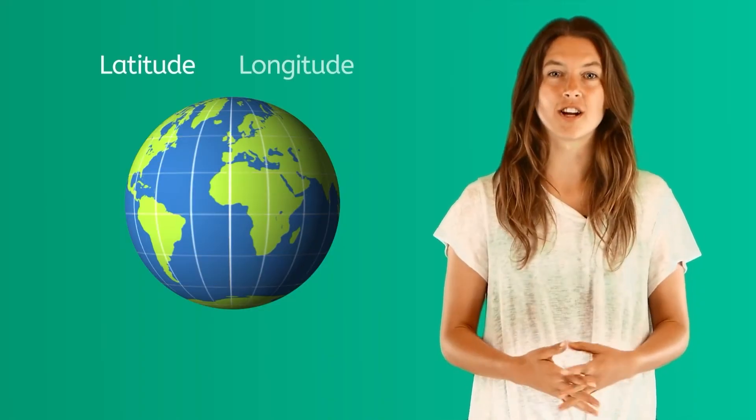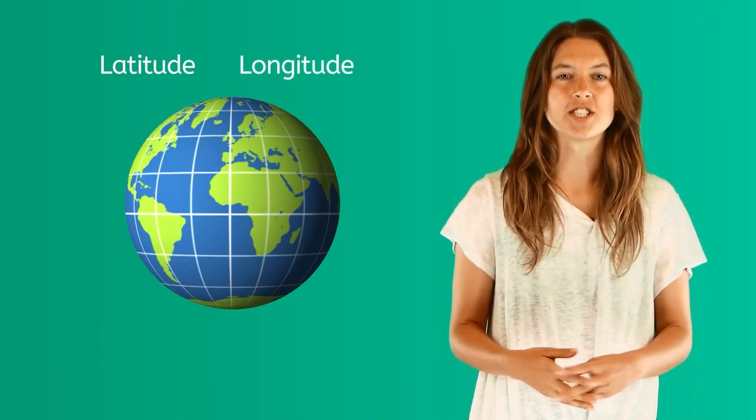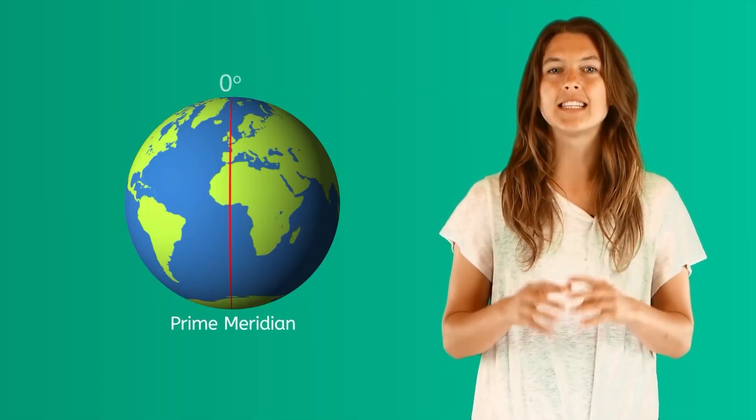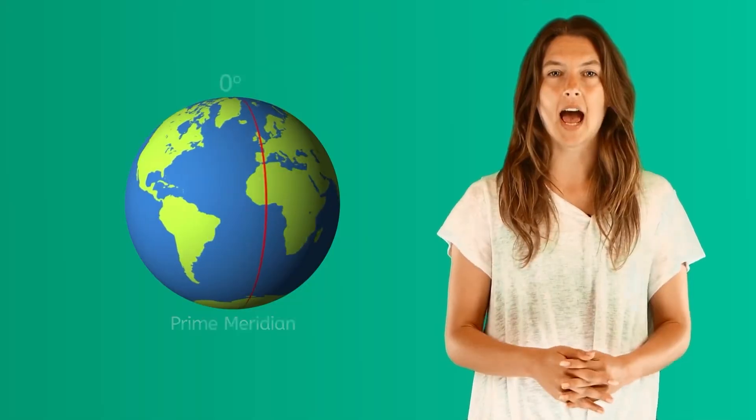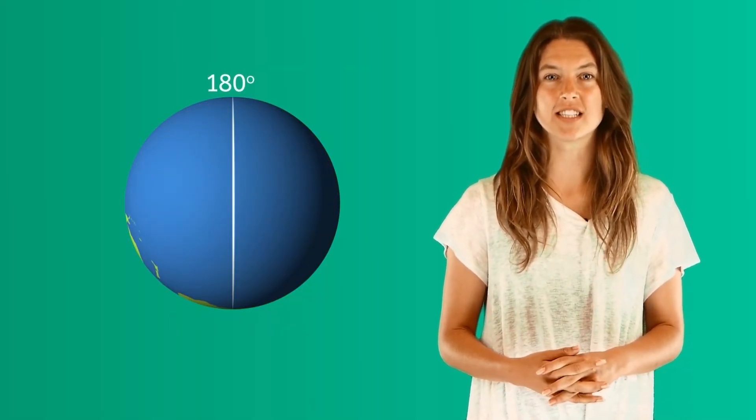These lines are called lines of latitude and longitude, and they are measured in degrees. The Prime Meridian is considered to be at zero degrees longitude. Around the opposite side of the Prime Meridian, the longitude is 180 degrees longitude.